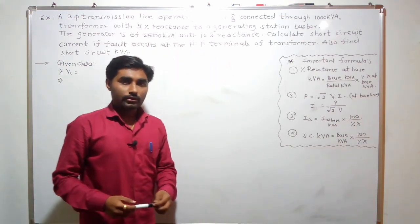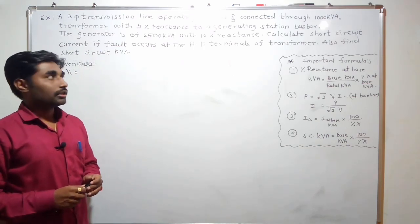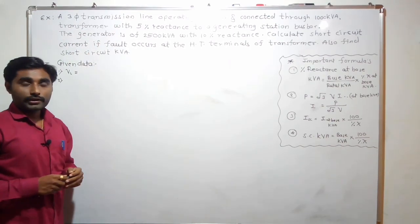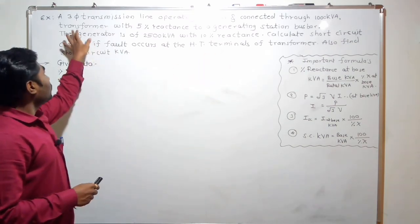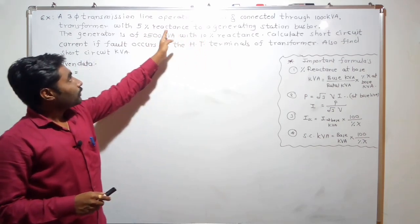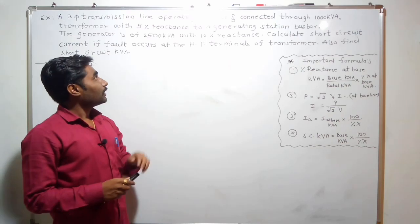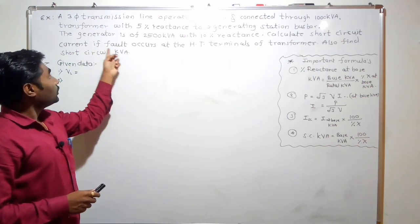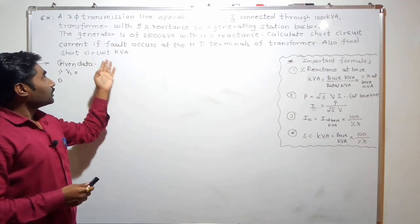Here I have written one example, so let's first read this example and then we will solve it. A three phase transmission line operating at 66 kV and connected through a 1000 kVA transformer with 5% reactance to a generating station bus bar. The generator is of 2500 kVA with 10% reactance. We have to calculate short circuit current if fault occurs at HT terminals of transformer, and also we have to find out the short circuit kVA.